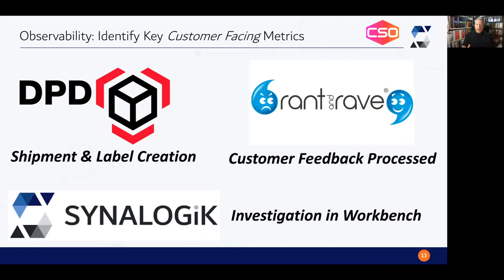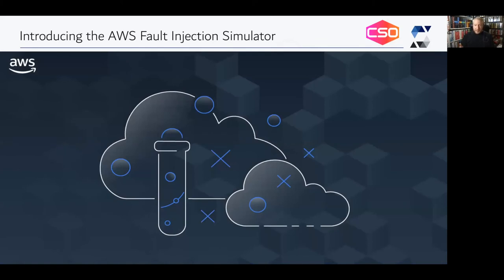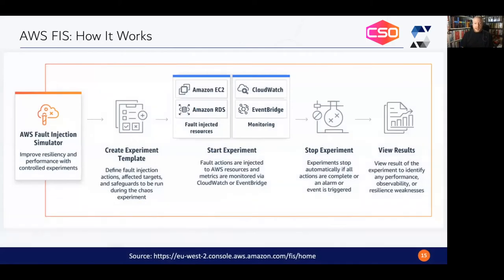So with all of that background — the idea of chaos engineering as the discipline of experimenting in your production environment to see what happens when you introduce unknown circumstances — we will make use of the new AWS Fault Injection Simulator. Perhaps you've been using Chaos Monkey or written scripts to do similar; FIS is a managed service that can go behind AWS services and trigger faults that would be very difficult to do otherwise. The Fault Injection Simulator consists of experiments: you create an experiment template, run the experiment, the experiment stops, you look at the results, draw conclusions, rinse, repeat.